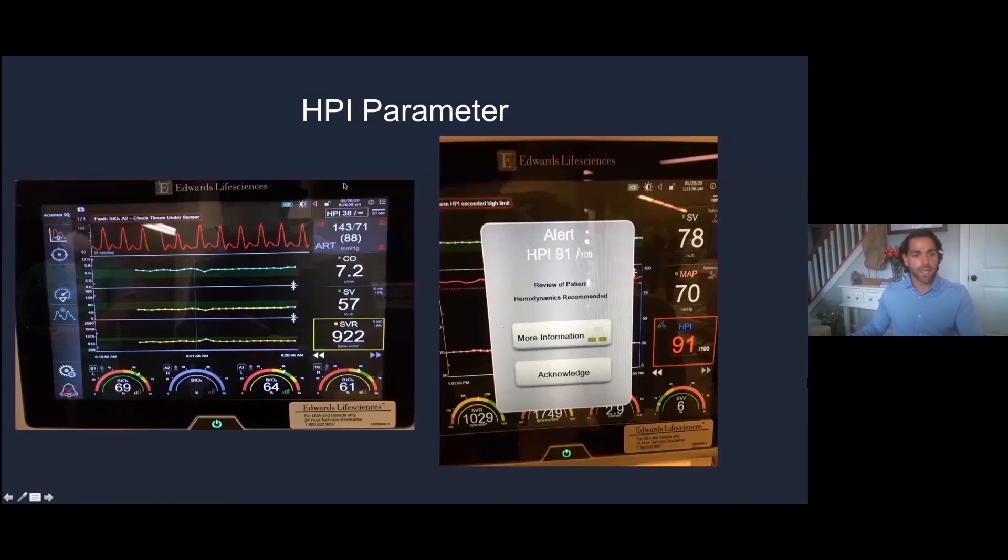Looking at these screens again, we're going to see these trends and the HPI rise. As the HPI approaches 85 twice or above 90, we're going to see this alert screen pop up. You can touch the screen, acknowledge this and continue, or we can click this more information button, which will take us to a secondary screen.